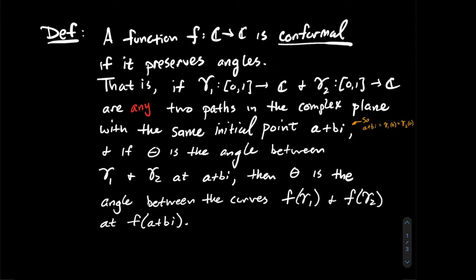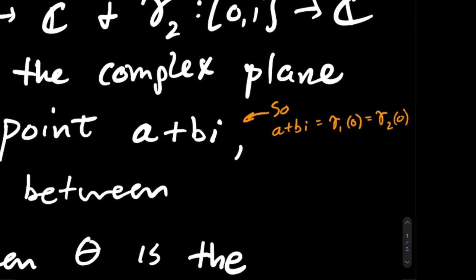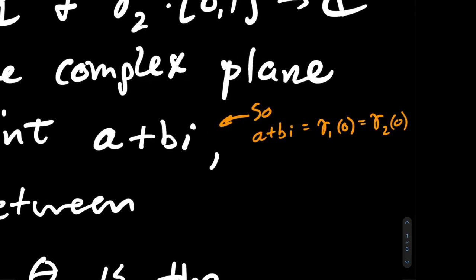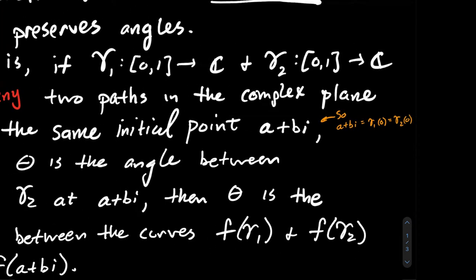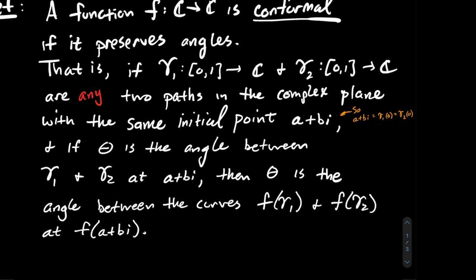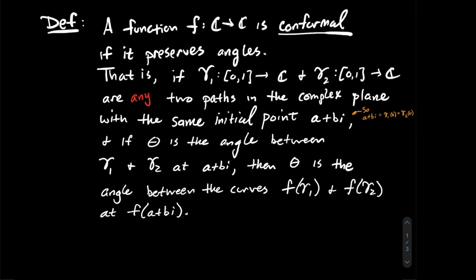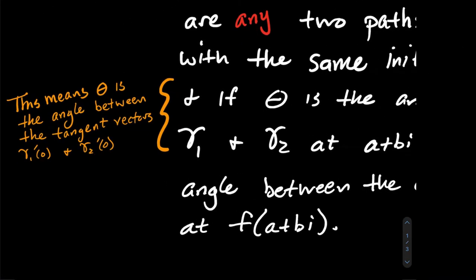To clarify: saying these curves have the same initial point a+bi means a+bi = gamma 1(0) = gamma 2(0), where 0 is the first point in the domain. A path in the complex plane is a continuous function whose domain is the real interval from 0 to 1, mapping into the complex numbers. The angle theta between two paths refers to the angle between the tangent vectors gamma 1'(0) and gamma 2'(0).